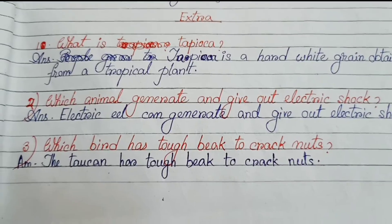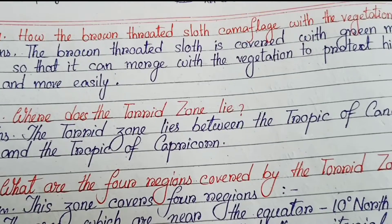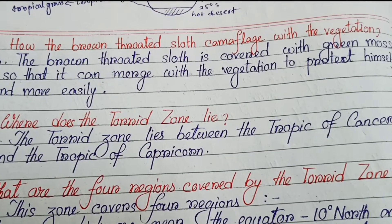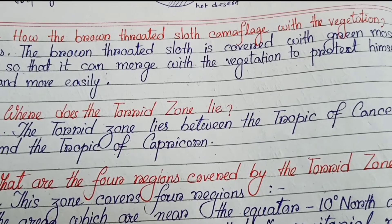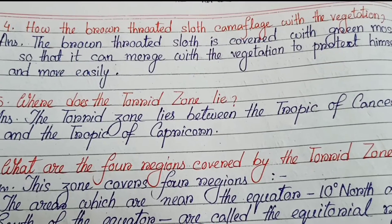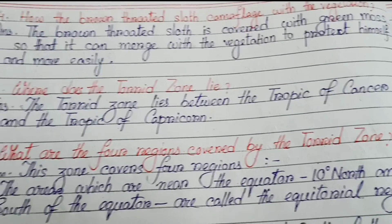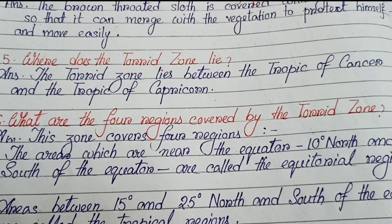Number 3: Which bird has a tough beak to crack nuts? The toucan has a tough beak to crack nuts. Number 4: How does the brown-throated sloth camouflage with the vegetation? The brown-throated sloth is covered with green moss so that it can match with the vegetation to protect itself and move easily.